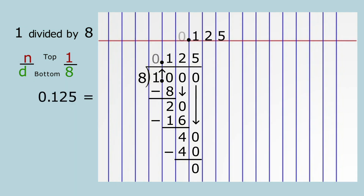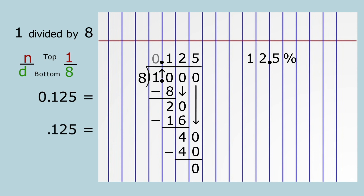Let's move to a clean space. Move the decimal point two spaces to the right and write the percent symbol immediately. The decimal point is between two numbers — the two and the five — so we can erase the leading zero. One-eighth equals one hundred twenty-five thousandths, or point one two five. One-eighth equals twelve point five percent, or twelve and a half percent. All these are correct.